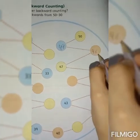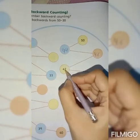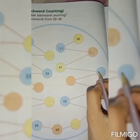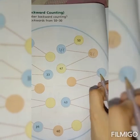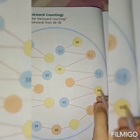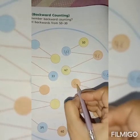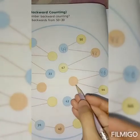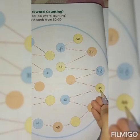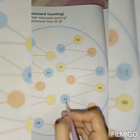48. What comes before 48? 47. Here it's written. What comes before 47? 46. What comes before 46? 45. Okay students, what comes before 45? 44. Before 44, 43.